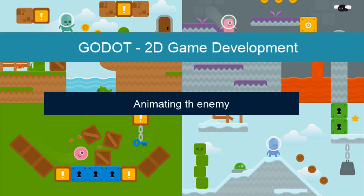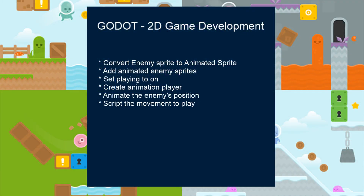In this lesson we're going to look at animating the enemy. This involves converting the enemy from a normal sprite to an animated sprite, then adding extra images to that animated sprite and setting it to play so it's always playing. Then we're going to create an animation for the player so that it moves across the screen to make it harder for the player to avoid.